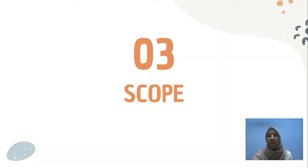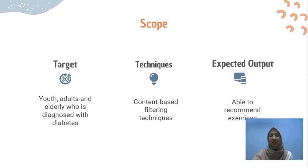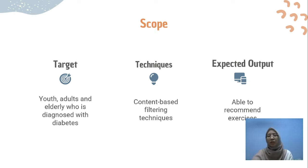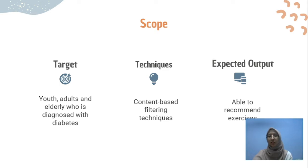Next is the scope of the study, which focuses on youth, adults, and elderly who are diagnosed with diabetes as the target. The technique used for this project is content-based filtering, which uses item profiles to find the similarity between items and find the highest similarity with user preferences. The expected output of the system is to recommend exercises according to user age and health condition, providing the duration and frequency of the exercise.